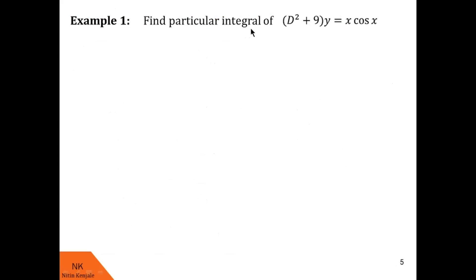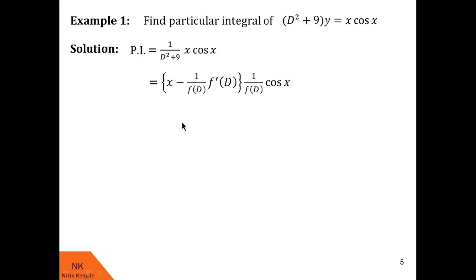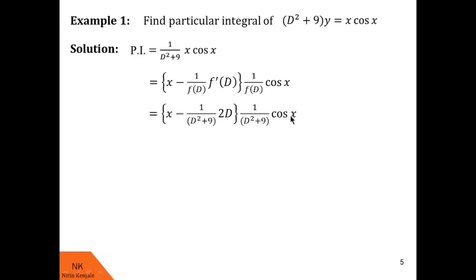Here we are asked to find the particular integral of (D² + 9)y = x·cos(x). Once again, the RHS is of the type x·v where v is cos(x). So yp will be given as 1/(D² + 9) of x·cos(x). Applying the formula, this equals x minus 1/f(D) times f'(D) times 1/f(D) of cos(x). Now we substitute f(D) = D² + 9 and f'(D) = 2D.